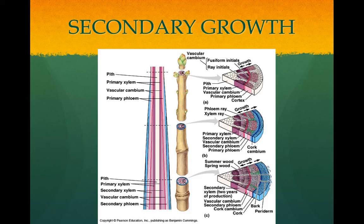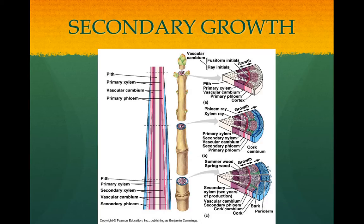The cork cambium is the type of meristematic tissue that forms from parenchyma cells in the cortex. As the stems thicken due to secondary xylem, the cork cambium is pushed outward. Mature cork cells are dead with thick walls. Bark is everything external to the vascular cambium, and bark is made of secondary phloem, cork cambium, and cork.